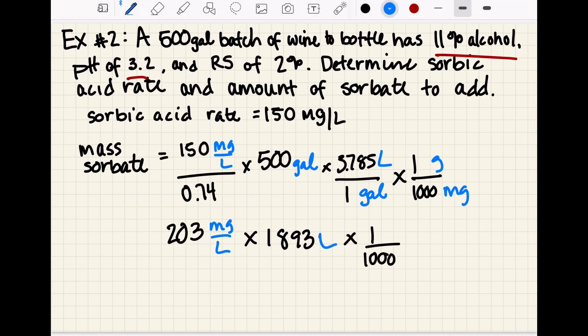We can cross out milligrams, cross out liters, our answer will be grams which is what we want. So 203 times 1,893 divided by 1,000 gives us an addition of 384 grams of sorbate.